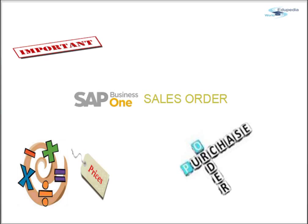This is possible as long as the appropriate settings are found in the administration module. If those settings are missing, then this option may not be available to every user. In SAP Business One, sales orders affect your stock level — when you create and post a sales order, the stock available to sell is reduced by the quantity in the order. Although no inventory transaction occurs, the items are reserved or allocated to that customer.